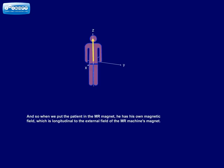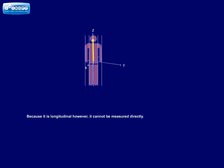And so when we put the patient in the MR magnet, he has his own magnetic field, which is longitudinal to the external field of the MR machine's magnet. Because it is longitudinal, however, it cannot be measured directly.